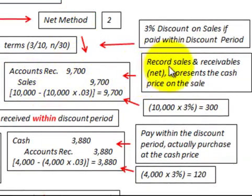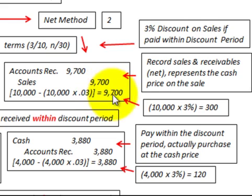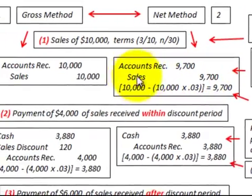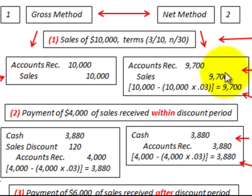With the net method, we record sales and receivables at the net amount, representing the cash price. With a three percent discount, ten thousand dollars times three percent equals three hundred dollars. So ten thousand less three hundred equals nine thousand seven hundred dollars. We increase accounts receivable at the net amount of nine thousand seven hundred dollars and recognize sales at nine thousand seven hundred dollars.